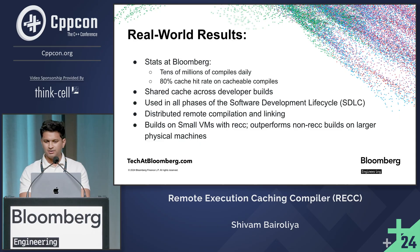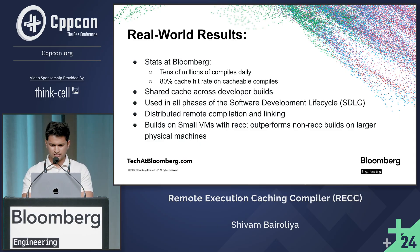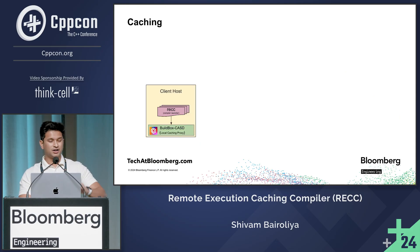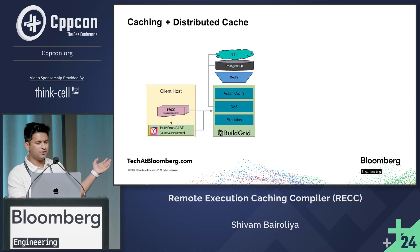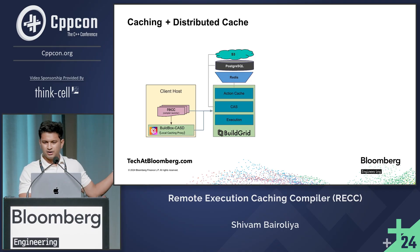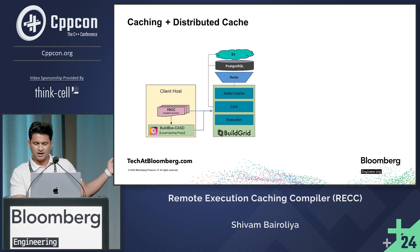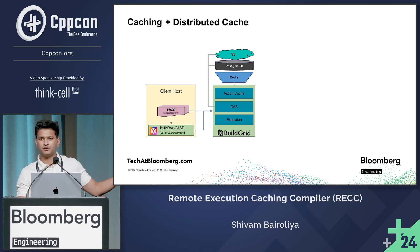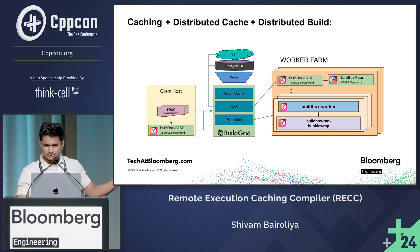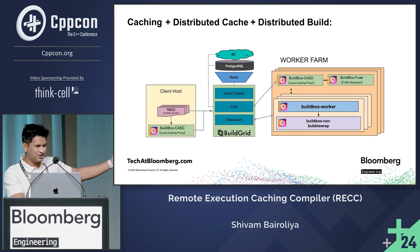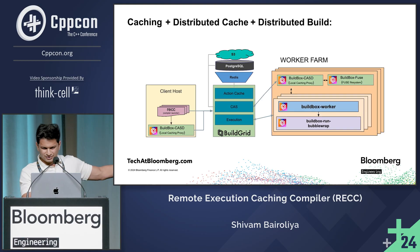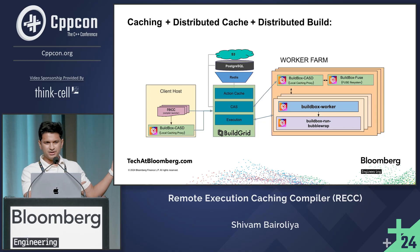This is an architecture for single host caching. We can extend it further for distributed caching — with this setup, you can have a shared cache between developers and different workflows. Then we can extend it even further and achieve a distributed build. All the components in this image are completely open source and you can use it today.